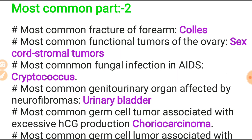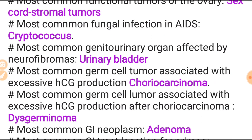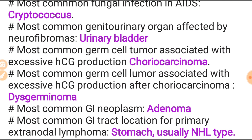Most common fracture of the forearm is the Colles' fracture. Most common functional tumor of the ovary is the sex cord stromal tumor. Most common fungal infection in IT is cryptococcus. Most common genitourinary organ affected by neurofibromas is the urinary bladder - this is very important. Before the exam you must revise so you don't miss two or three questions.